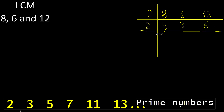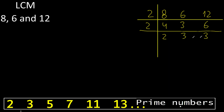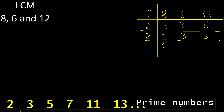4 divided by 2 is 2. 6 divided by 2 is 3. 3 cannot be divided by 2, therefore equal. 2 divided by 2 is 1. 3 cannot be divided by 2, therefore equal.